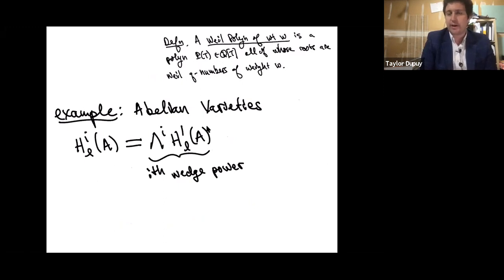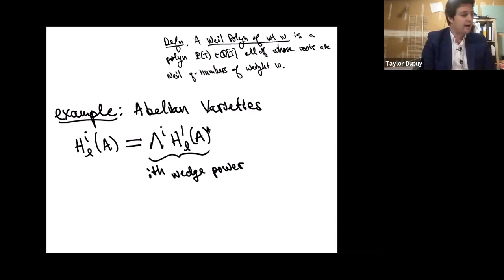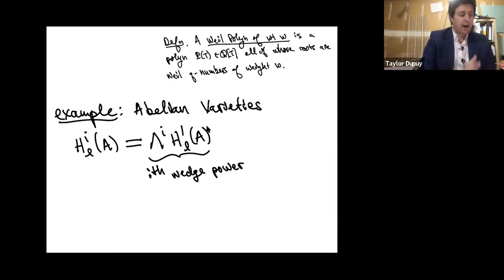One thing about the cohomology of abelian varieties is that the H^i are wedge powers of H^1 under cup product — that's an isomorphism. One easy way to see this is to view a complex torus as a product of circles and use the Künneth formula. The point is that H^1 knows all about the other cohomologies, so we only need to really worry about H^1.